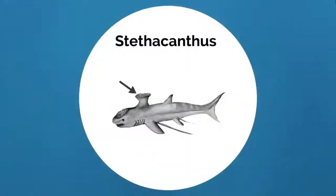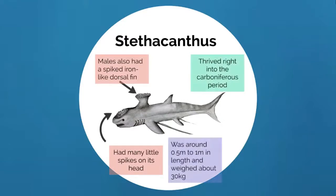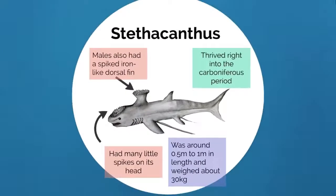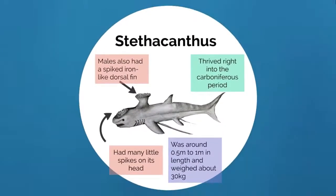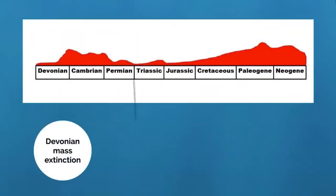Other species such as Stethacanthus, with its bizarre looking spiked iron-like dorsal fin, thrived right into the Carboniferous Period, known as the Golden Age of Sharks. This Golden Age was when species such as Stethacanthus underwent a large adaptive radiation. This diversification continued until one of the greatest mass extinctions occurred 250 million years ago — the P-T extinction, commonly known as the Great Dying, which occurred at the end of the Permian.